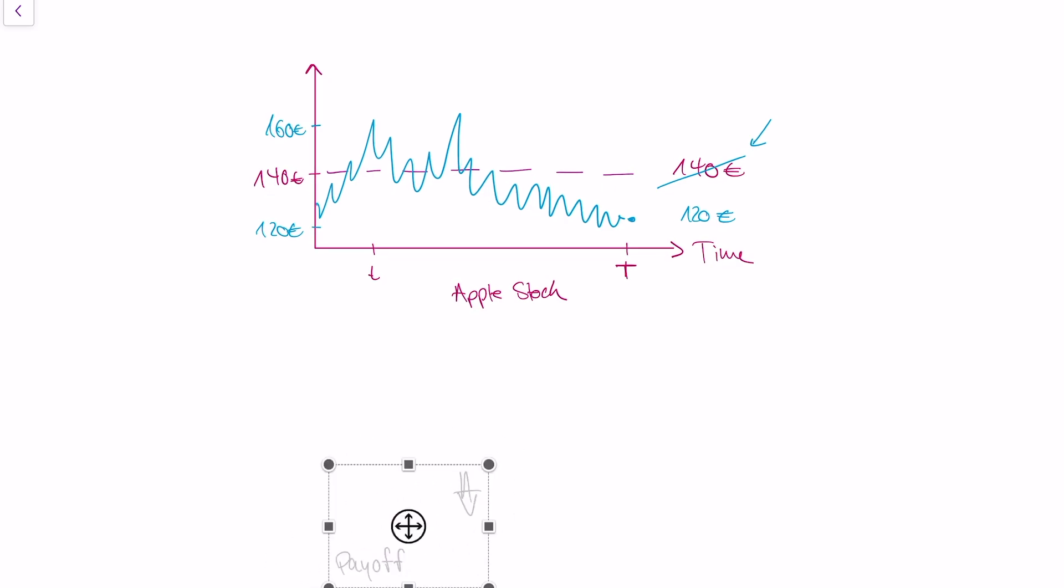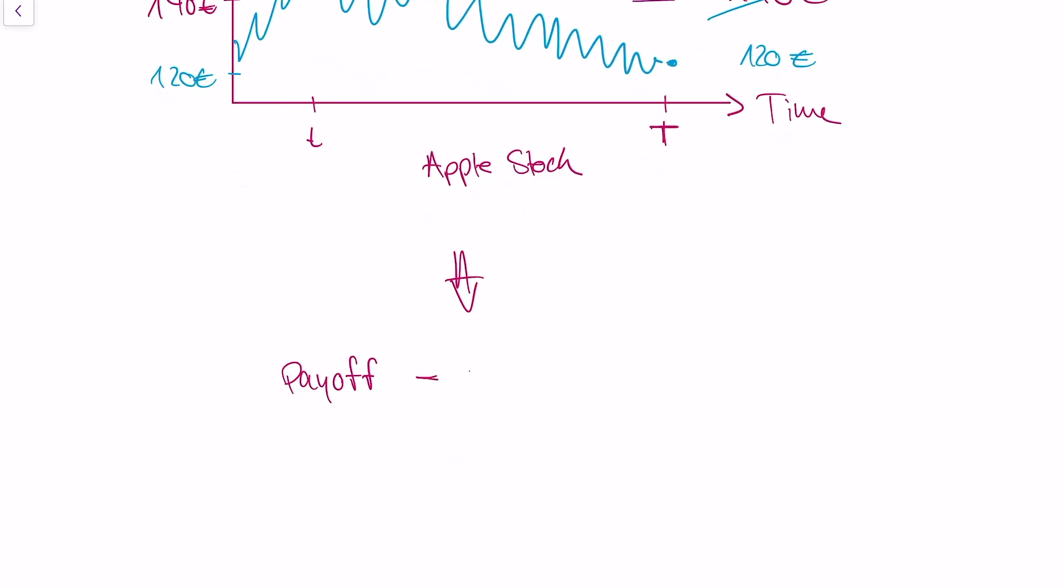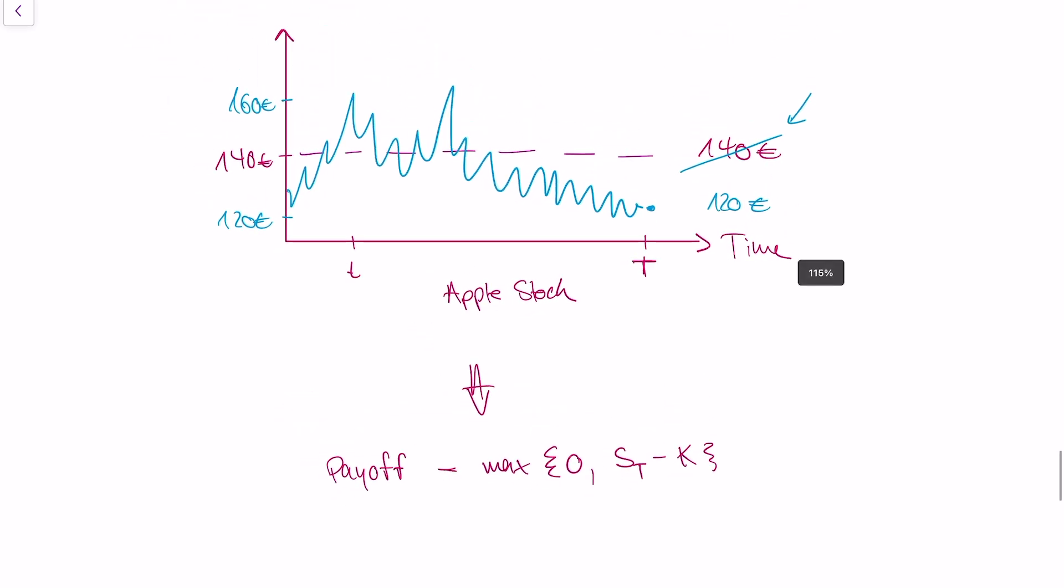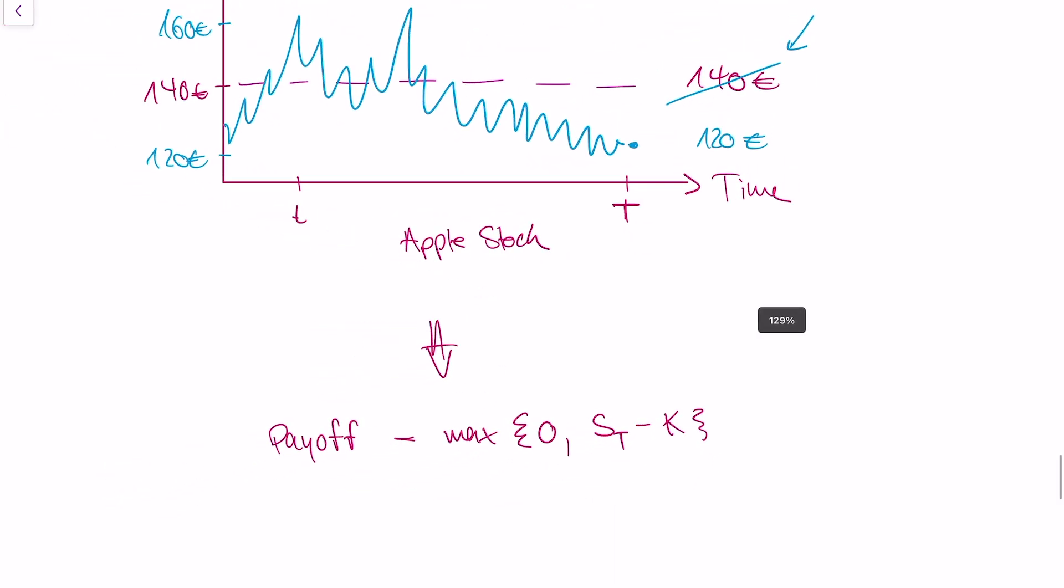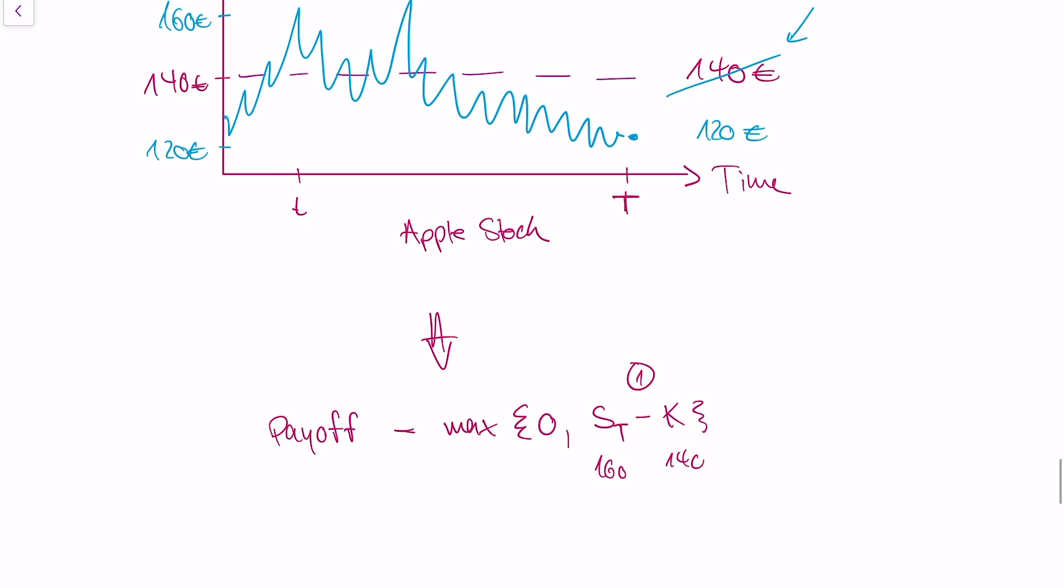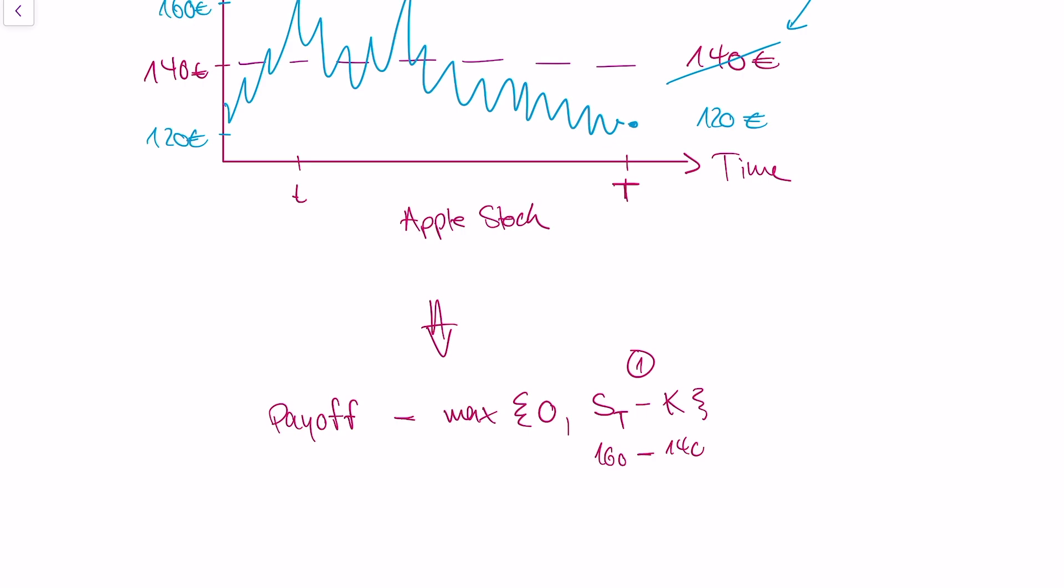So in other words, what is the payoff of an option? Well, the payoff is given by the maximum of zero and the price of the stock at time T minus our strike price K. And this exactly represents our two cases. So in the first case, I told you the price of the underlying stock was larger than our strike price K. Our Apple share was at 160 and our strike price is at 140. Then you would use the option and your revenue from the option is given by the difference between the two.